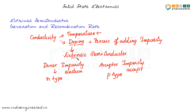Such a doped semiconductor we call an extrinsic semiconductor. If we add donor impurity — impurity that can donate an electron — we get an n-type semiconductor. If we add an acceptor impurity, which can accept an electron and create a hole, we get a p-type semiconductor.